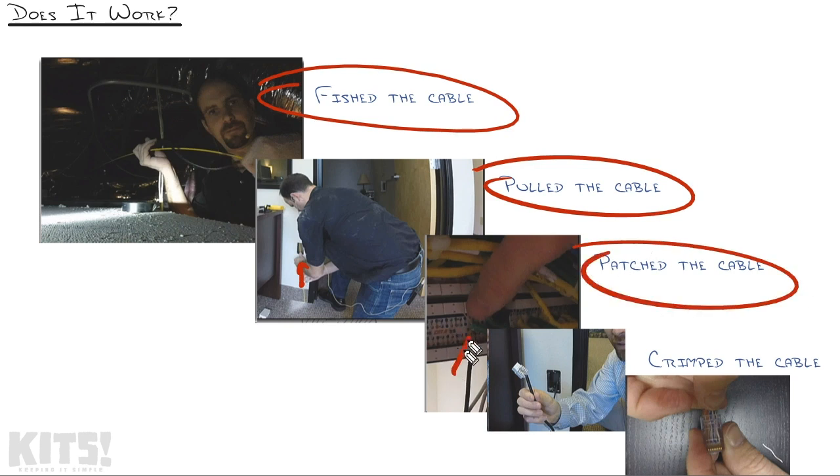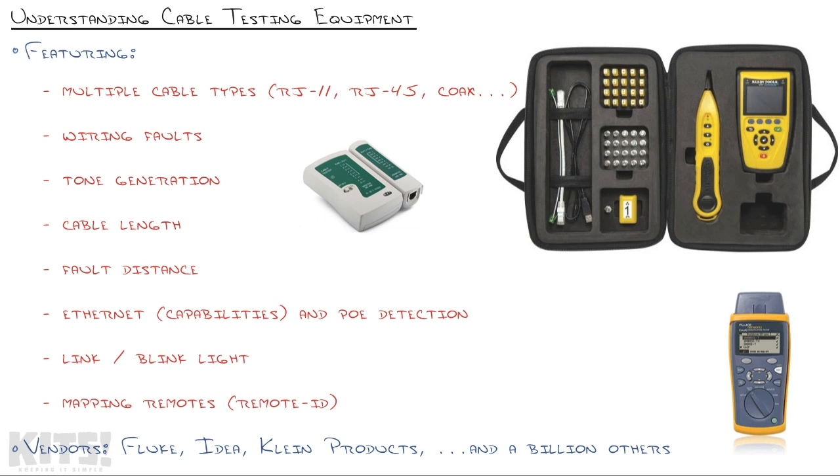I patched the cable in at the patch panel and at the keystone jack, and in the case of the wireless access point, I crimped an end on the cable. There's a lot that could have gone wrong in any one of those steps, and that's where our network cable testing equipment comes into play. This allows us to validate that the cable itself works well.